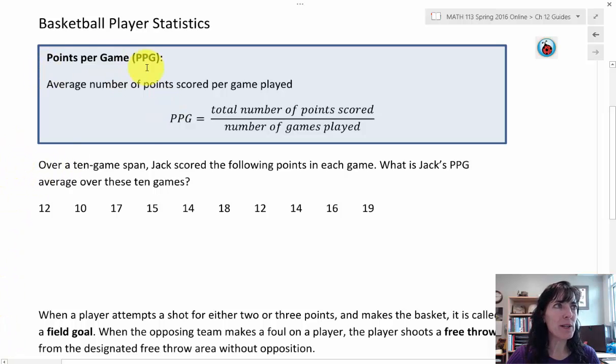We'll look at points per game, abbreviated as PPG on tables online. That is defined to be the average number of points scored per game played.